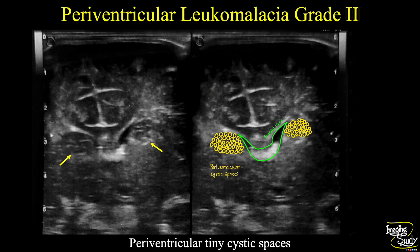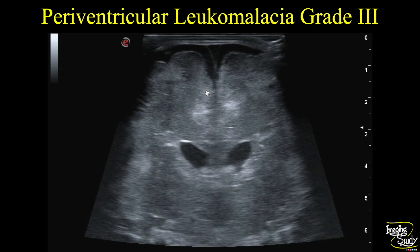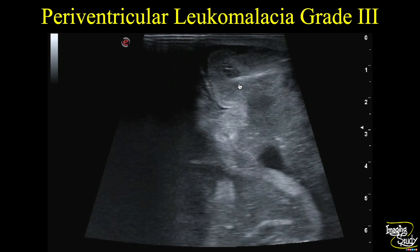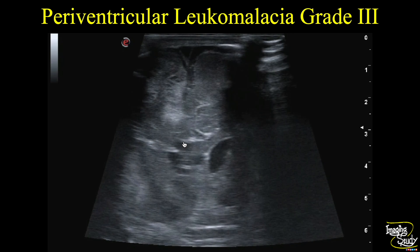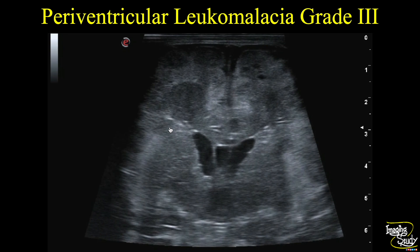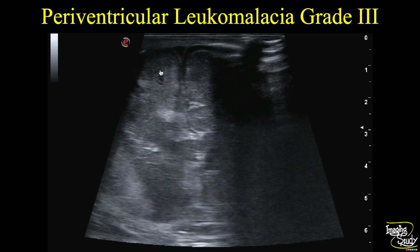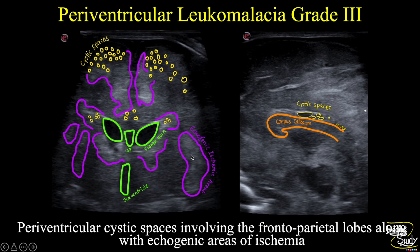Here is a picture of grade 3 periventricular leukomalacia. The ventricles are slightly prominent or dilated. If you check carefully, there are multiple tiny cystic spaces within the frontoparietal lobe and also tiny cystic spaces superior to the corpus callosum. The overall brain parenchymal ecogenicity is heterogeneous — the periventricular region shows increased ecogenicity and parasagittal regions are also echogenic. This is a case of grade 3 periventricular leukomalacia with cystic spaces extending to the frontoparietal lobes with echogenic areas of ischemia.